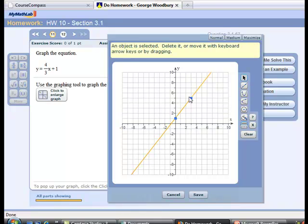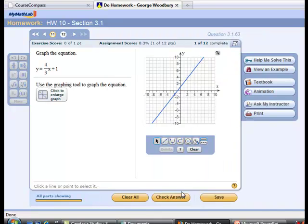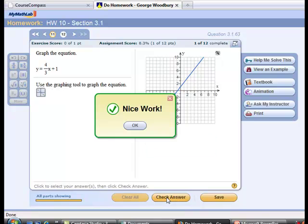Remember that my third ordered pair was 6, 9. 6, 9 would be right here, which lies on the line. Everything seems to be in order, so I'm going to save this graph. And I'm going to check my answer. Nice work.